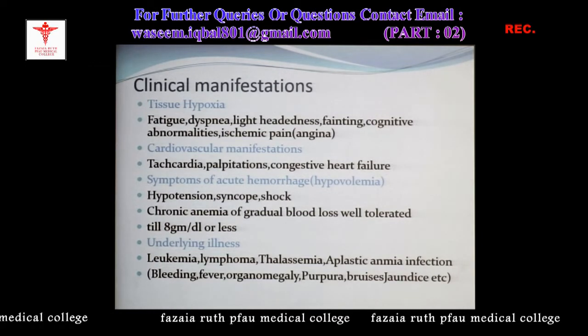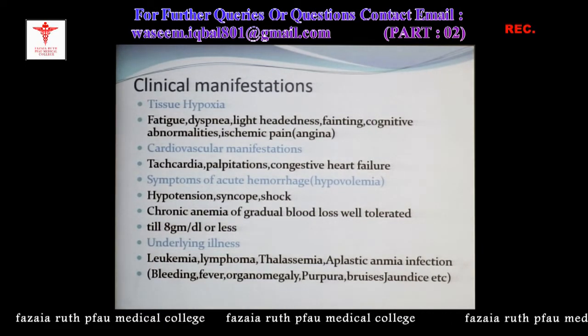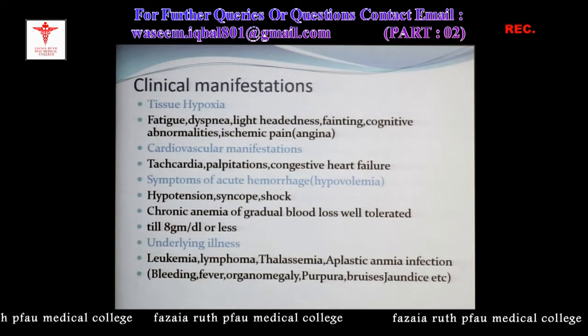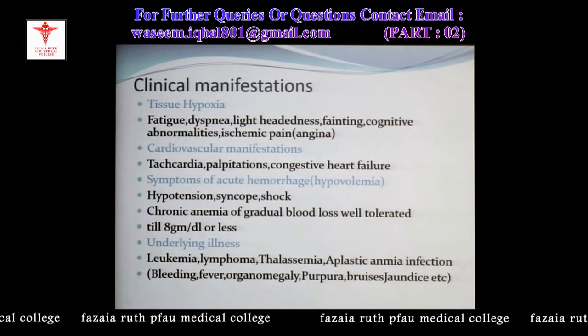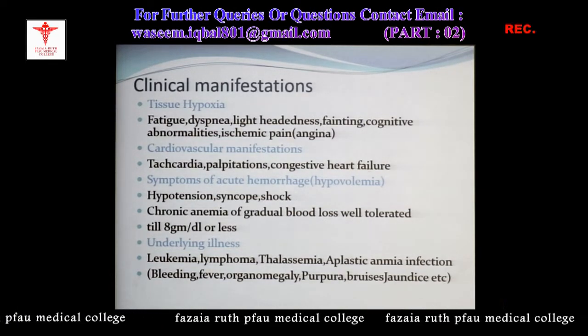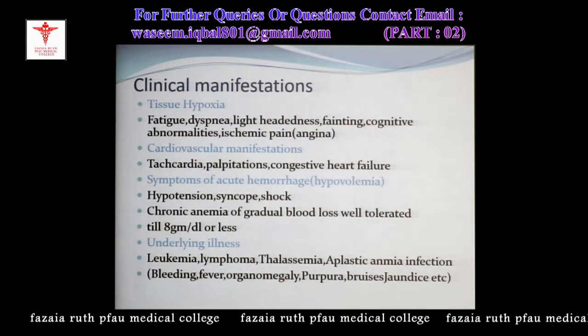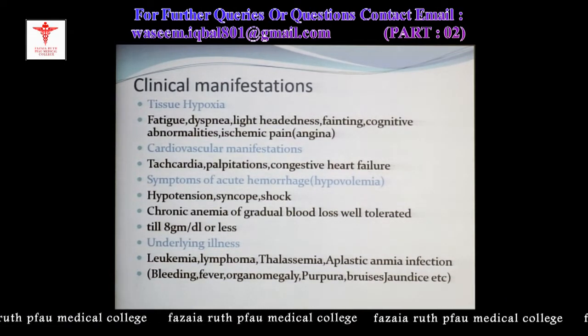Jaundice is a very typical sign of hemolytic anemia. Unconjugated bilirubin is increased, resulting in raised serum bilirubin — that is jaundice.